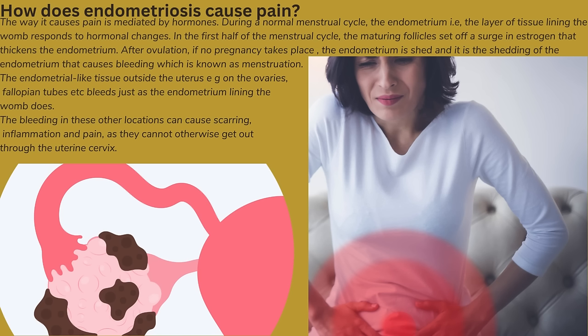The endometrial-like tissue outside the uterus — for example, on the ovaries and fallopian tubes — bleeds just as the endometrium lining the womb does. The bleeding in these other locations can cause scarring, inflammation, and pain, as it cannot otherwise get out through the uterine cervix.